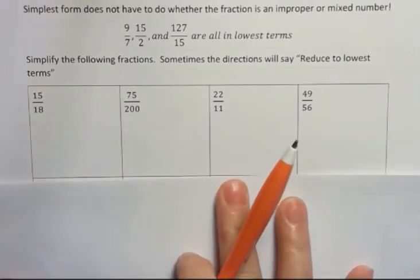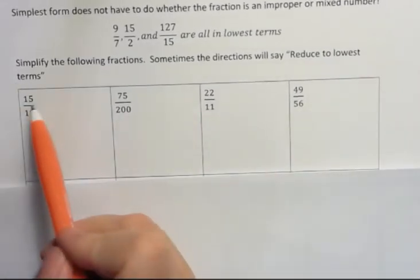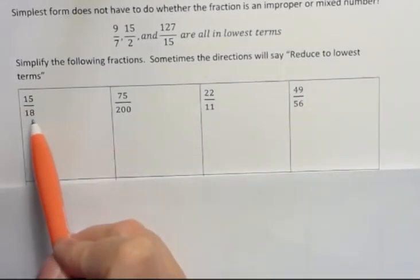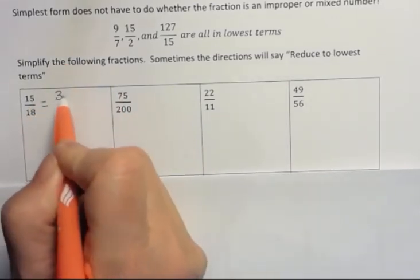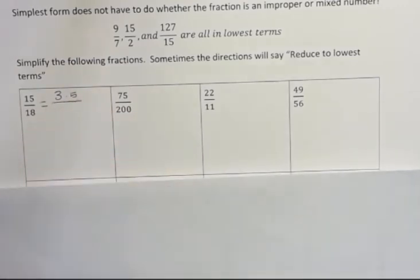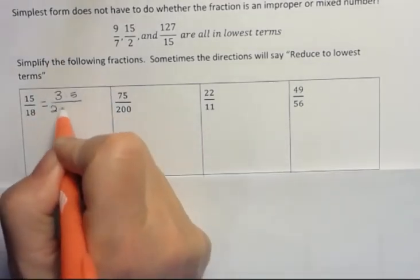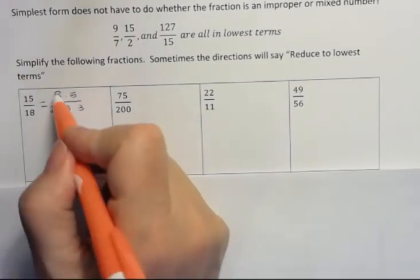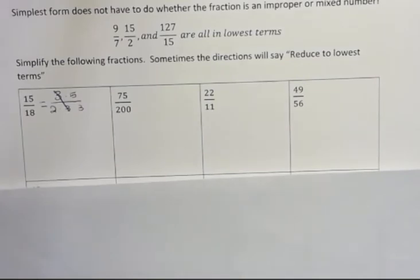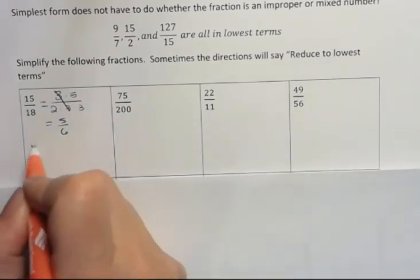Okay, so 15 over 18. You have a couple of choices here. One, you could write the prime factorization of each number and then cancel. So the prime factorization of 15 is 3 times 5. Remember, prime numbers, 1 is not a prime number, so we wouldn't write as 1 times 15. What's the prime factorization of 18? It's 2 times 3 times 3. But see what happens is the 3s, 1 on top and 1 on the bottom, cancel, leaving 5 over 2 times 3 is 6. That's one way to do it.